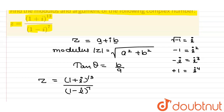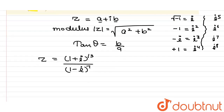Using the powers-of-i cycle, we can find: i⁵ has the same value as i, i⁶ has the same value as i², i⁷ has the same value as i³, and i⁸ has the same value as i⁴. These values repeat in a cycle of 4.